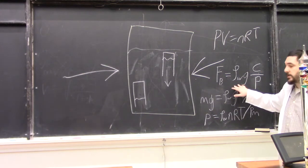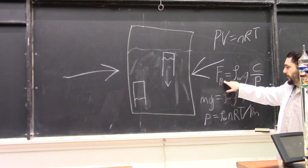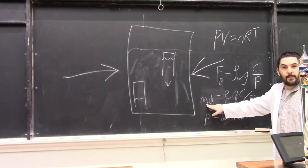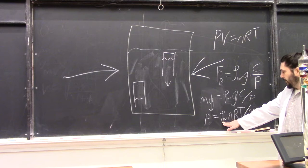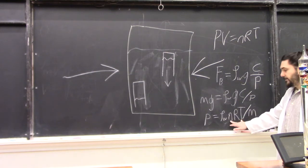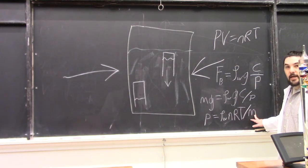So whether or not it floats or sinks depends on if the buoyant force offsets the weight of the jar, which depends on the density of the water, how much gas we have, the temperature, and the mass of the jar.